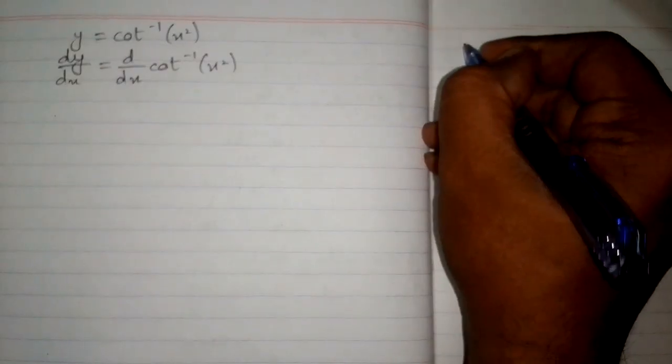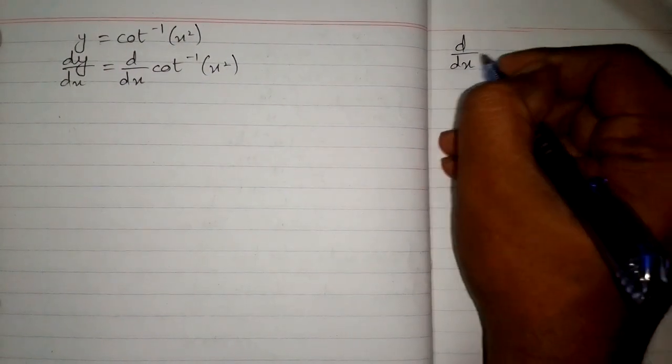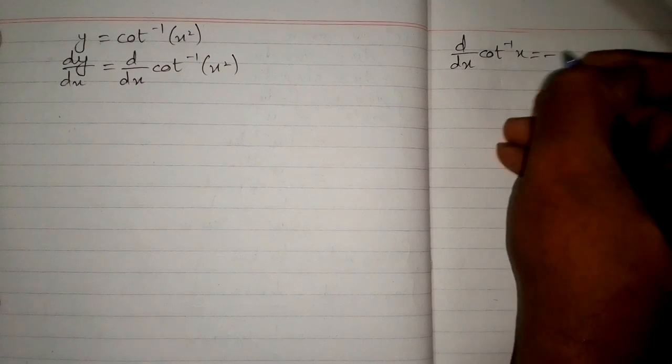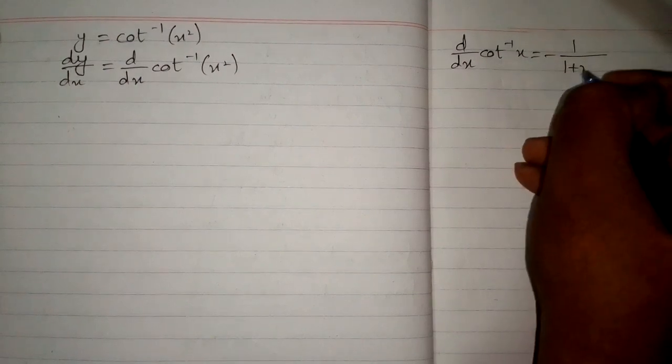Here, we know that the derivative of inverse cotangent of x is minus 1 upon 1 plus x squared.